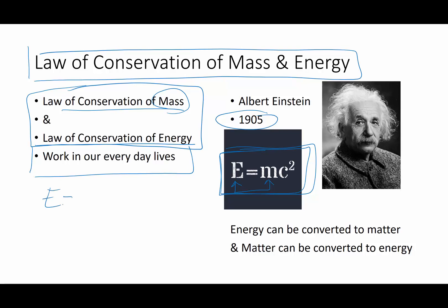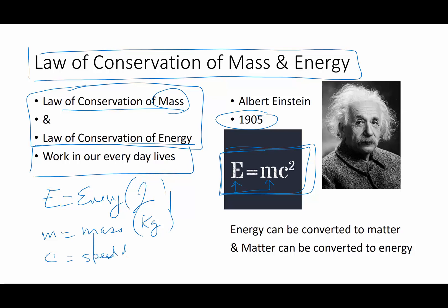In E equals mc squared, E is energy measured in joules, m is mass measured in kilograms, and c stands for the speed of light. The speed of light is very, very fast — 3 times 10 to the 8 meters per second. It's a big, big number, and then you square it, which makes these values lots and lots bigger.